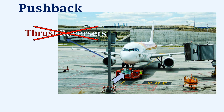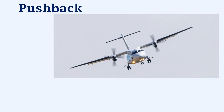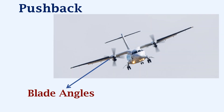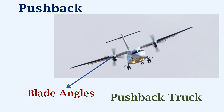An exception to this would be some turboprop aircraft in which the blade angles can be adjusted to push the aircraft backward. This requires specific approvals, a lot of care must be taken by the cockpit crew, and it consumes a lot of fuel. So the best solution for an aircraft pushback is using a pushback truck or a pushback tractor.